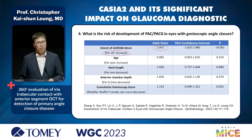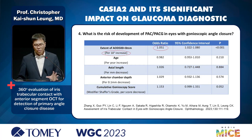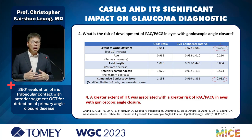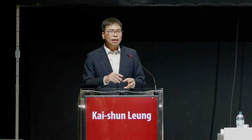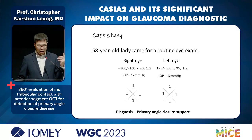The most important question was: what is the risk of development of PAC and PACG? ITC measured by OCT was related to the risk of angle closure development — not so much gonioscopy findings. This further highlights that anterior segment OCT is a more precise tool to evaluate angle closure, and more importantly, it is related to the risk of angle closure glaucoma. The limitation is that this is a cross-sectional study — we need longitudinal follow-up to validate these findings.